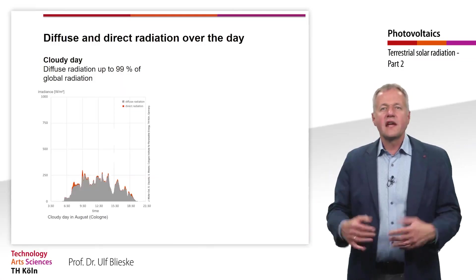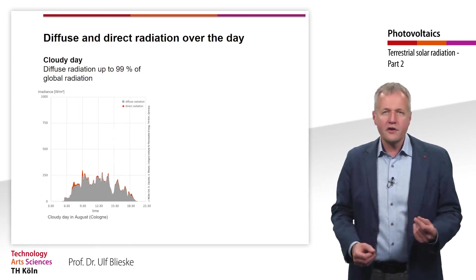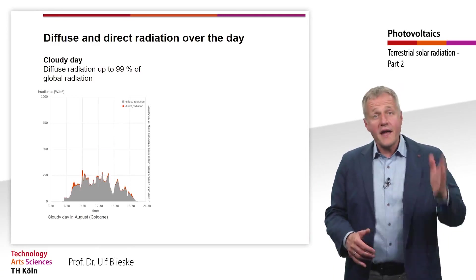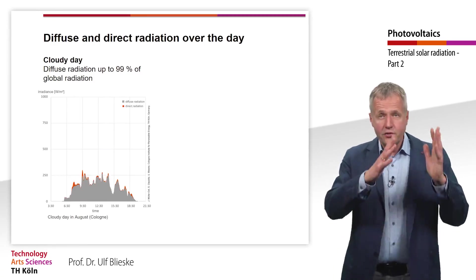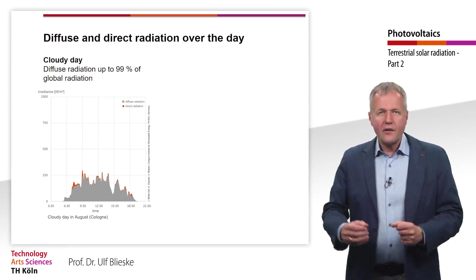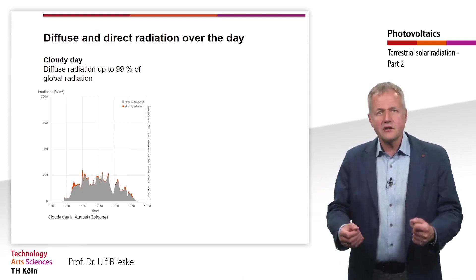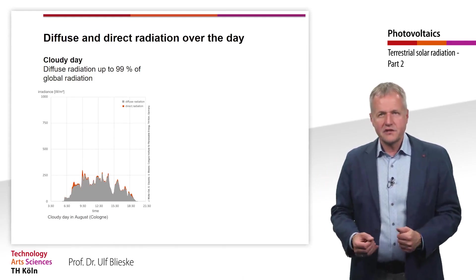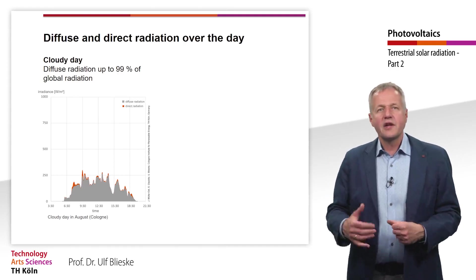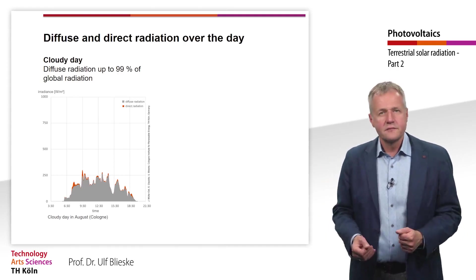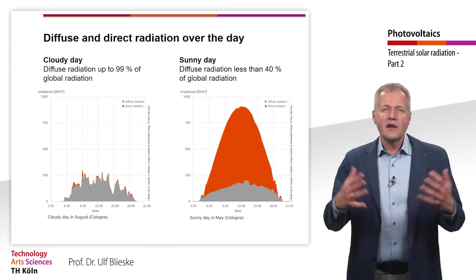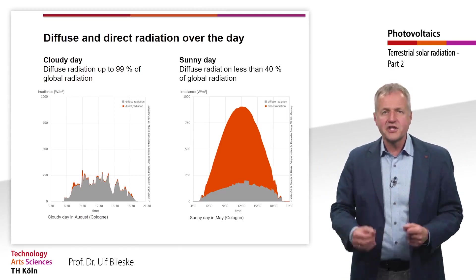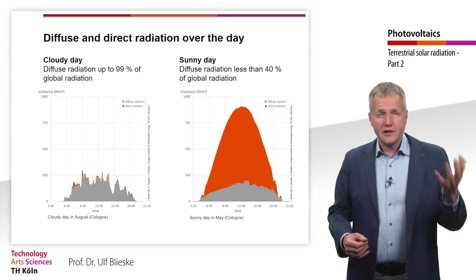This diagram shows a day with low irradiation in Cologne in August. The x-axis shows time in hours, and the y-axis shows irradiance in W per square meter. The grey area represents solar energy from diffuse radiation, while the orange and red represent solar energy from direct radiation — almost 100% of the irradiation is diffuse. The next picture displays a day with high irradiation in Cologne, where less than 40% of the global radiation is diffuse and the rest is direct radiation.